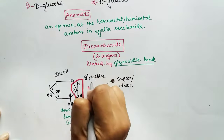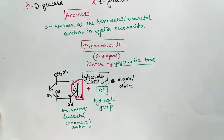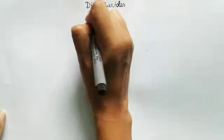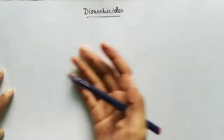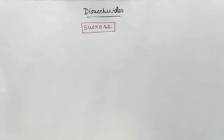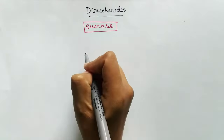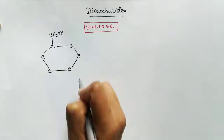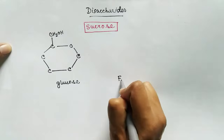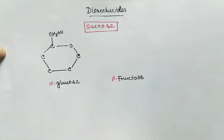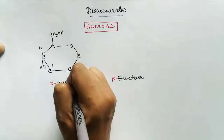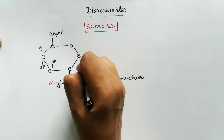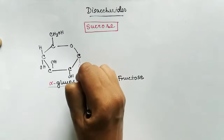In the previous video we talked about three main monosaccharides: glucose, fructose, and galactose. By this glycosidic bond these monosaccharides can bind with each other and form disaccharides. Sucrose is made up of two monosaccharides — one is a glucose molecule and another is a fructose molecule. The glucose molecule involved in sucrose is alpha glucose and the fructose is beta fructose.